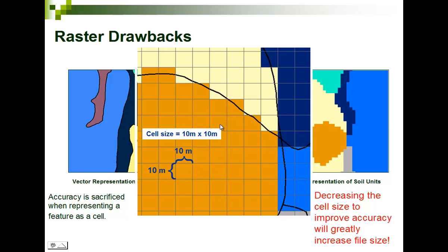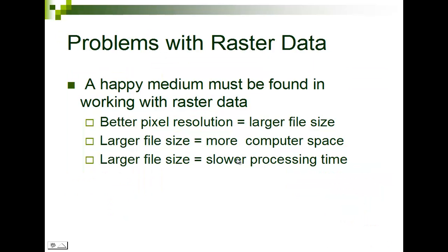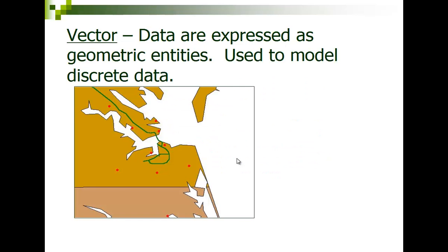In GIS, we store the actual attribute and the latitude/longitude location using this matrix or lattice of cells. In a digital image, you're storing the actual color. These talk about some of the problems with raster data, but I really want to get into the vector data model.